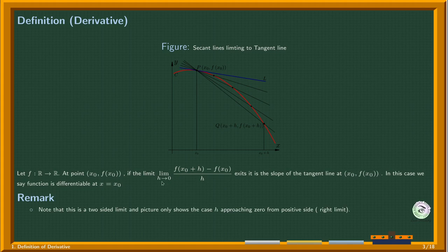Observe here: this limit as h goes to zero is a two-sided limit because there is no plus or minus mark here. So this is a two-sided limit. In the animation and the picture here we are only showing convergence when h is positive.